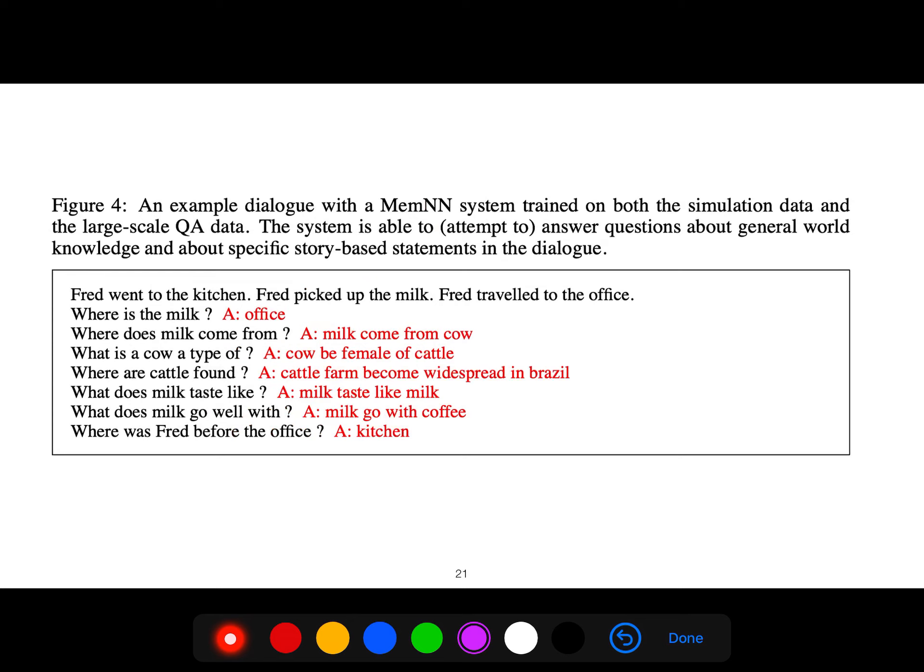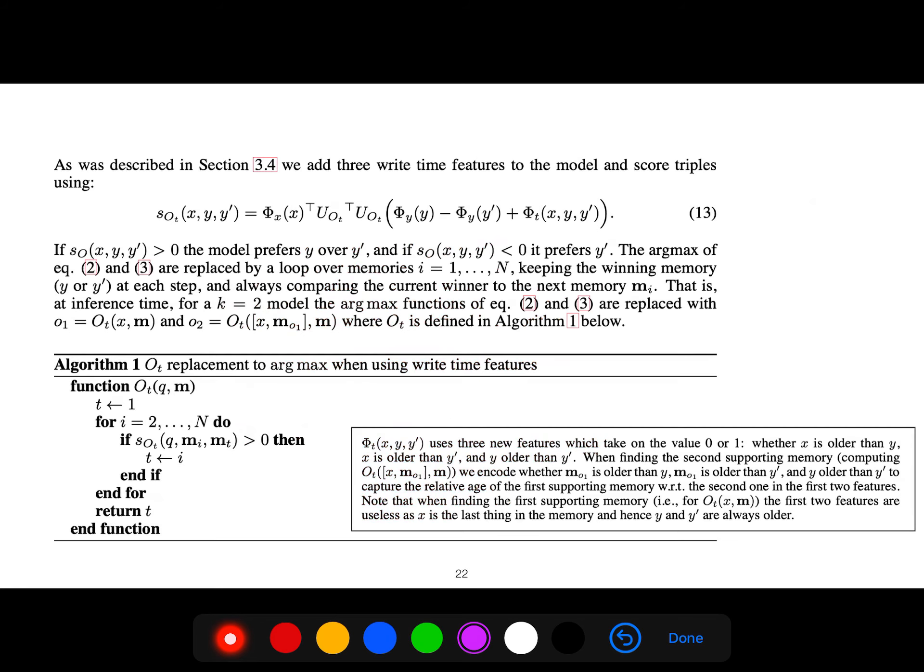Or in a dialogue thread. Went to the kitchen. Where is the milk? Where does milk come from? Milk comes from cow. What is a cow? What is a cow type of? Cow, female of cattle.